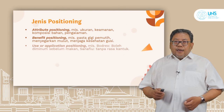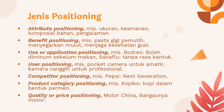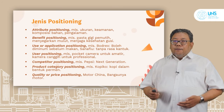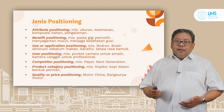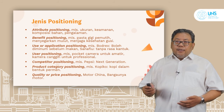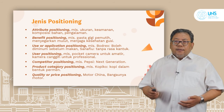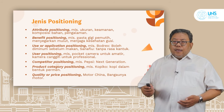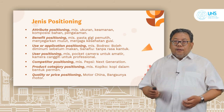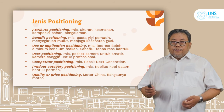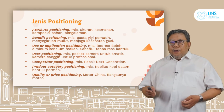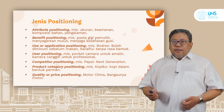Jenis positioning. Yang pertama adalah atribut positioning, misalkan terkait dengan ukuran, keamanan, komposisi bahan, dan pengalaman. Yang kedua adalah benefit positioning, terkait dengan misalkan pasta gigi pemutih, menyegarkan mulut, menjaga kesehatan gusi — positioningnya memiliki sebuah manfaat. Lalu, use or application positioning, seperti contoh produk Bodrek boleh diminum sebelum makan, atau Sanaflu tanpa rasa kantuk. Berikutnya adalah user positioning, positioning berdasarkan penggunanya, misalkan pocket kamera untuk amatir, lalu kamera canggih untuk profesional.